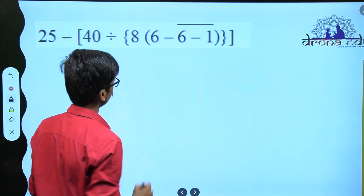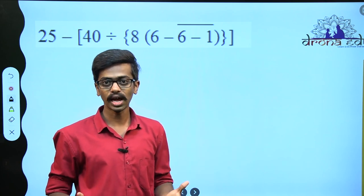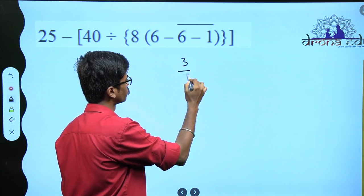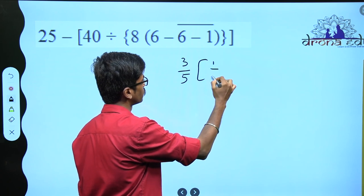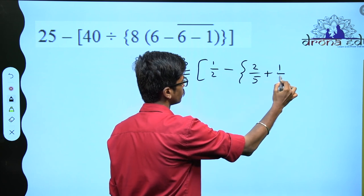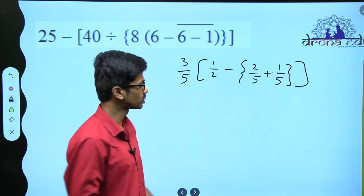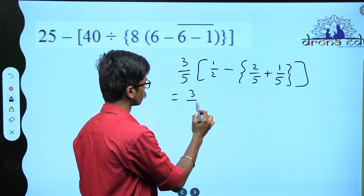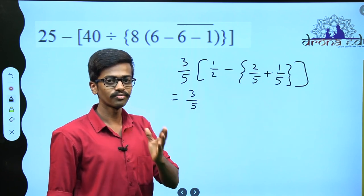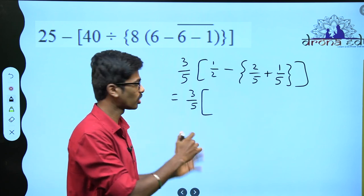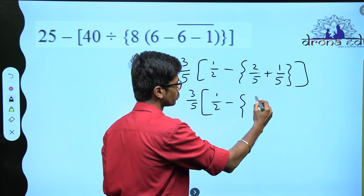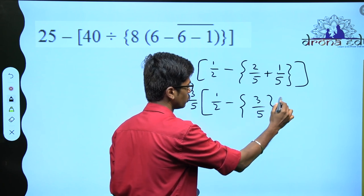You will be using BODMAS at various different places — whenever you need to group any number, you use BODMAS. These are just whole numbers; what if they give you fractions? Same thing you need to follow. For example, let us take one sum: 3 by 5 multiplied by, open square bracket, 1 by 2 minus of, open curly bracket, 2 by 5 plus 1 by 5, close curly bracket, close square bracket. For fractions you do all the working in the working column, take LCM and do all the stuff.